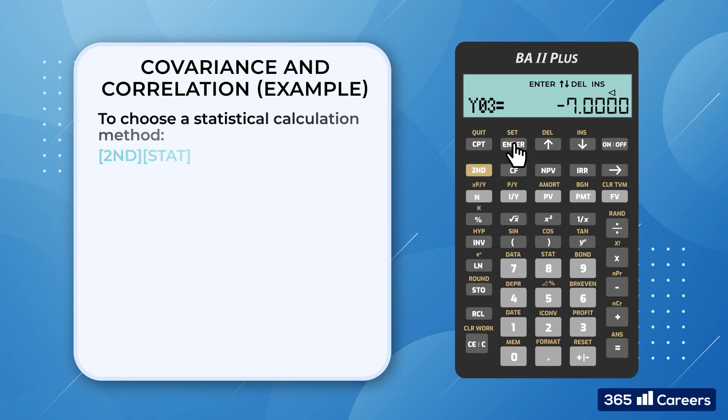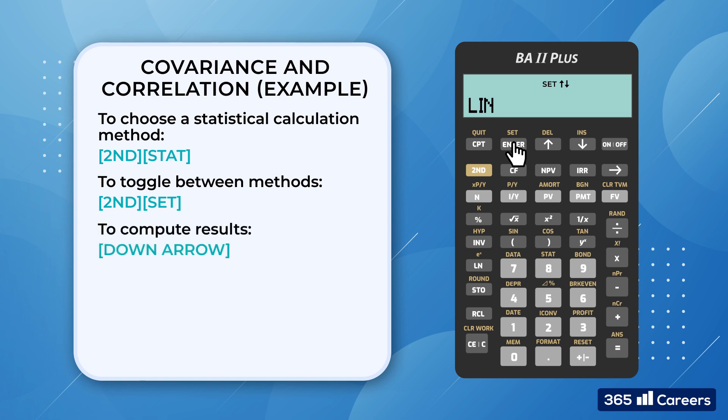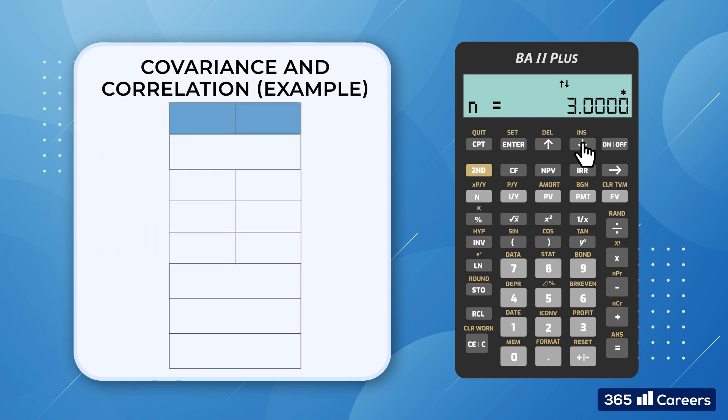The next thing we need to do is choose a calculation method by pressing 2nd and stat. As we mentioned, we analyze two-variable data. So we hit 2nd Set until Lin, as of Linear Regression, appears. Next, we press the down arrow to review the output. Let's see. n stands for the number of paired observations, which is 3 in our case.